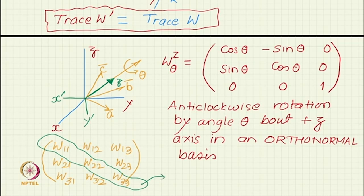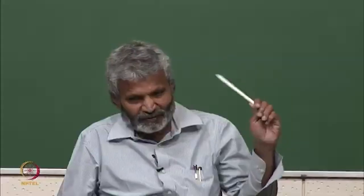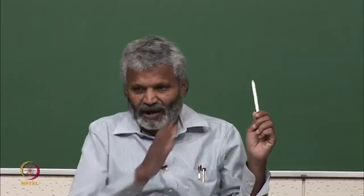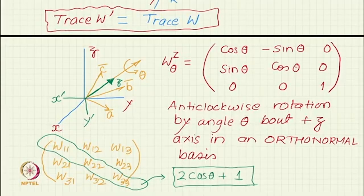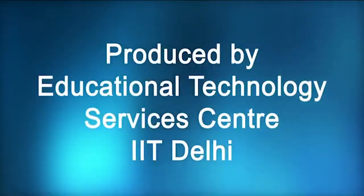But when we will add, the theorem is giving us the confidence that when we will add these three numbers, it has to be 2 cos theta plus 1. So trace of a rotation matrix, irrespective of the coordinate system - if the rotation is by an angle theta about whatever axis, the matrix will keep changing form depending on which way the axis is oriented, but if the angle is theta, the trace has to be 2 cos theta plus 1.